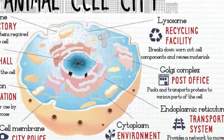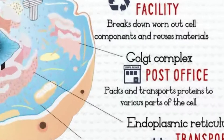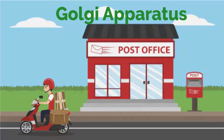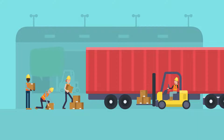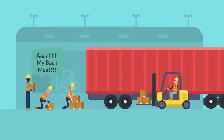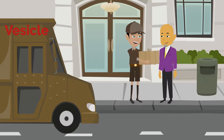Third, we have the Golgi apparatus, also known as the Golgi body, which is the post office for Cell City. It packages and uses vesicles to transport proteins and other materials to different parts of the cell.